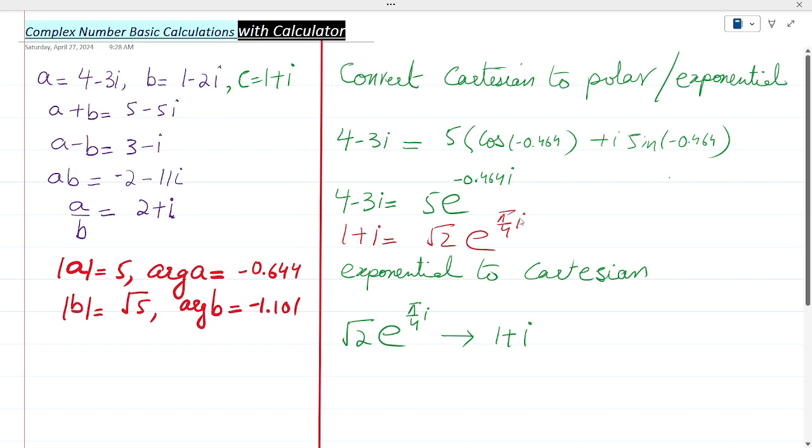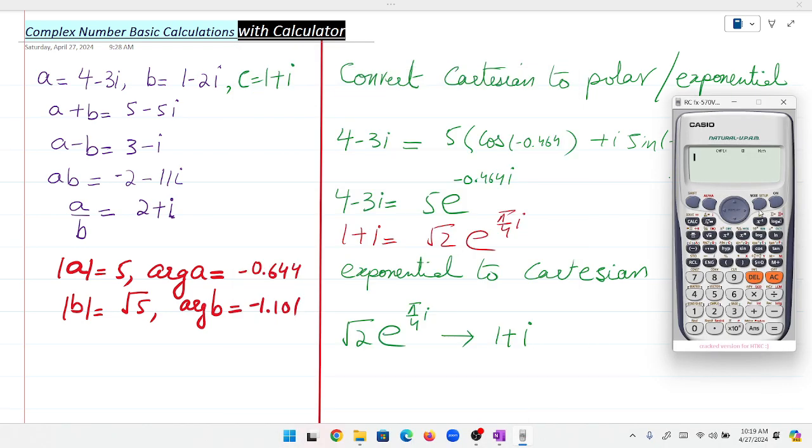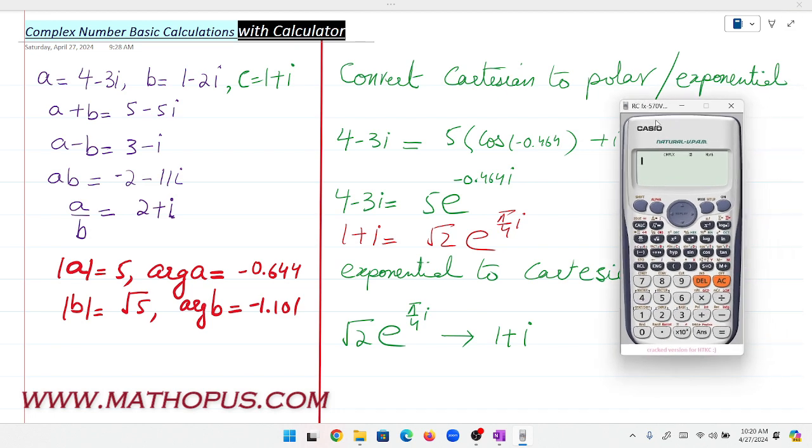In this video, we'll see how to use a calculator to perform basic calculations with complex numbers—addition, subtraction, multiplication, and division—and how to convert between Cartesian and polar forms. I'm using the Casio fx-991 calculator.